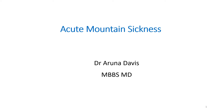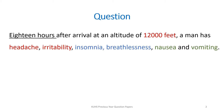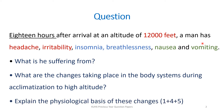In this video, we will be discussing about acute mountain sickness. Let us see a sample question that was asked before in the Kuhas University exam. 18 hours after arrival at an altitude of 12,000 feet, a man has headache, irritability, insomnia, breathlessness, nausea and vomiting. What is he suffering from? What are the changes taking place in the body systems during acclimatization to high altitude? Explain the physiological basis of these changes.